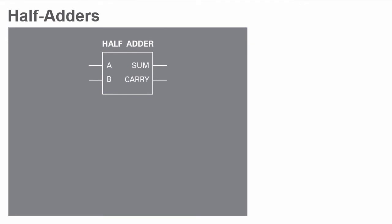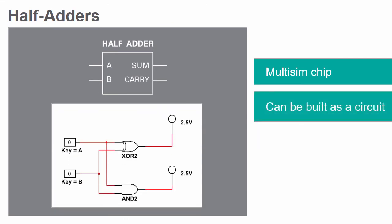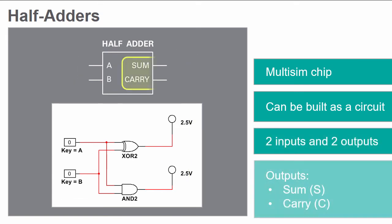Half adders can be represented in Multisim by a single component, or can be created using an AND and an exclusive OR gate. They have two inputs and two outputs. The outputs are labeled S-SUM and C-CARRY.